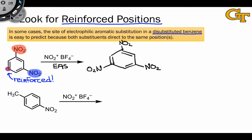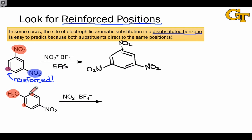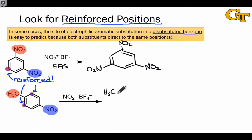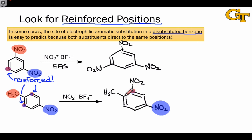In this second case, we also observe reinforced positions. Let's treat the two substituents separately and then see how their directing effects overlap. The methyl group is an ortho-para director, so it directs to positions ortho and para to itself. There is already a substituent at the para position, so it can only direct ortho. We then see the CH3 and NO2 substituents directing to the same positions — both of these positions are reinforced. It doesn't matter which position we substitute at, as those two positions are homotopic. In the major product, the new NO2 group is meta to the original NO2 group (the meta-director) and ortho to the CH3 group (the ortho-para director), located at a reinforced position.